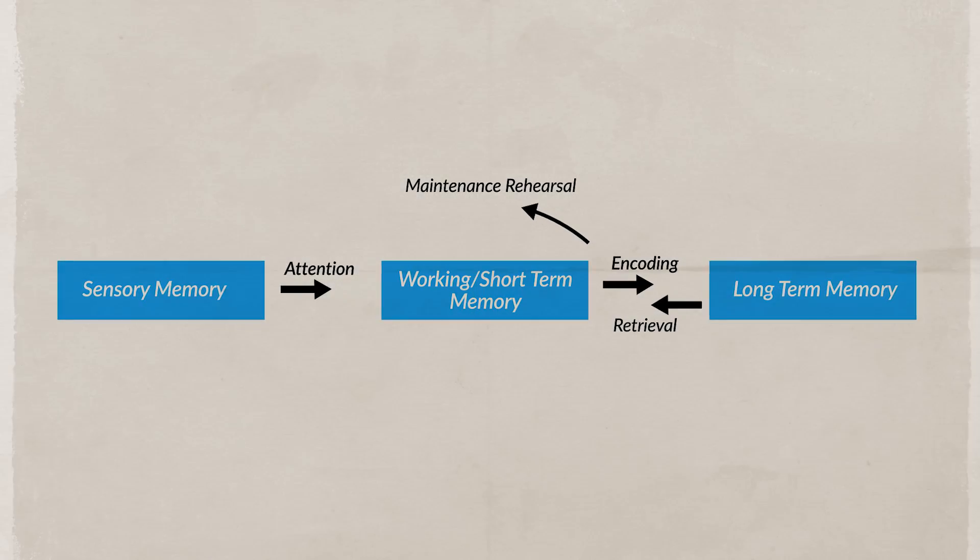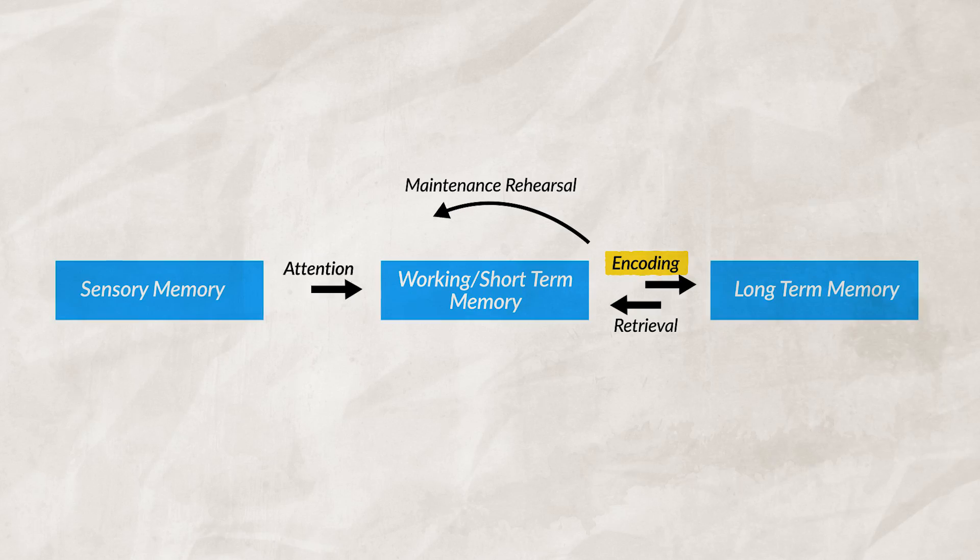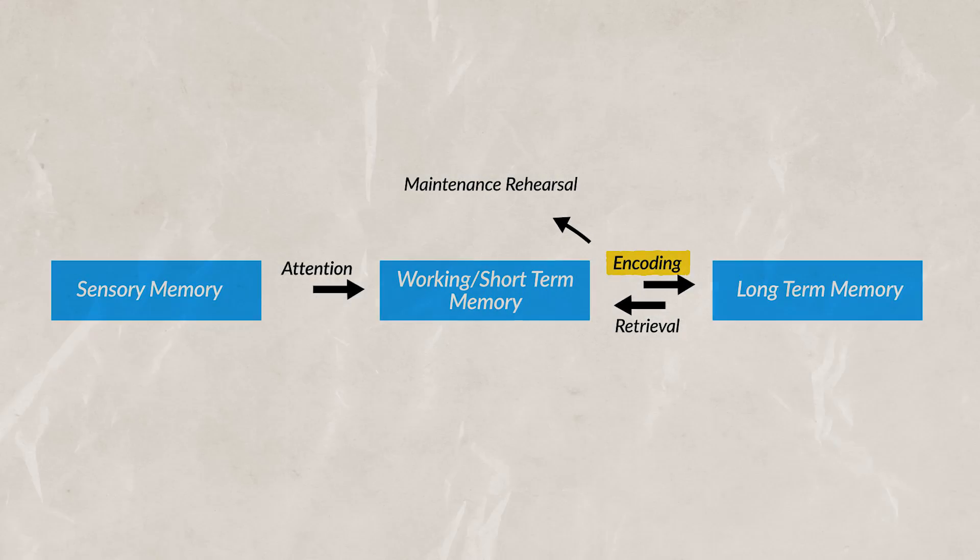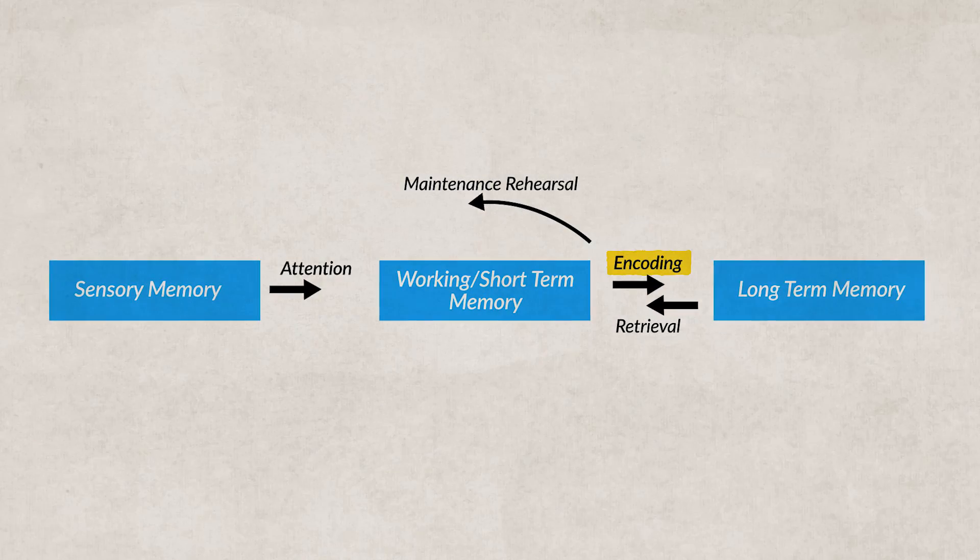Going back to problems with encoding: if we do not encode information correctly, then we will not be able to recall the information later. The information might have been in our working memory, but we failed to correctly encode it and move it into our long-term memory. As we get older, the encoding process slows down and it can be more difficult to efficiently encode new information.